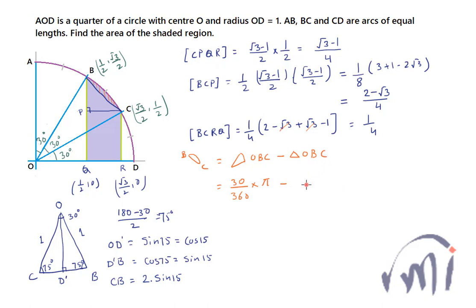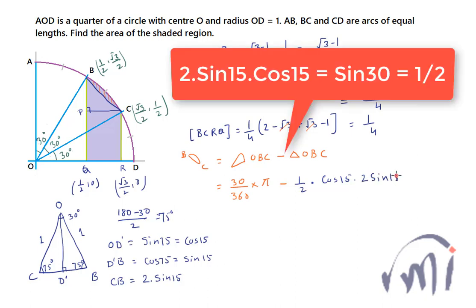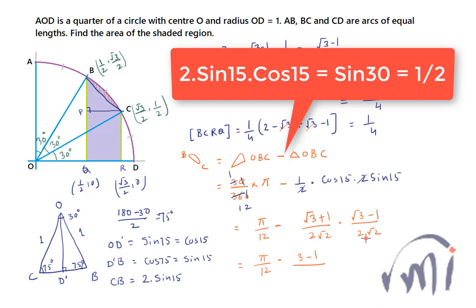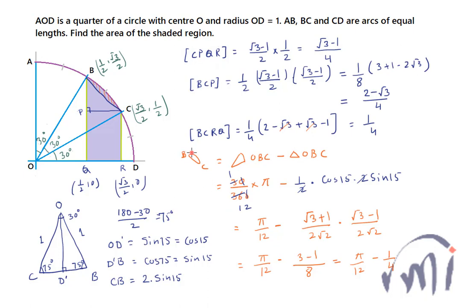The area of triangle OBC is (1/2) × cos 15 × 2 sin 15 = cos 15 × sin 15. Using the values cos 15 = (√3 + 1)/(2√2) and sin 15 = (√3 − 1)/(2√2), the product gives (3 − 1)/8 = 2/8 = 1/4. So the area of segment BC is π/12 − 1/4.